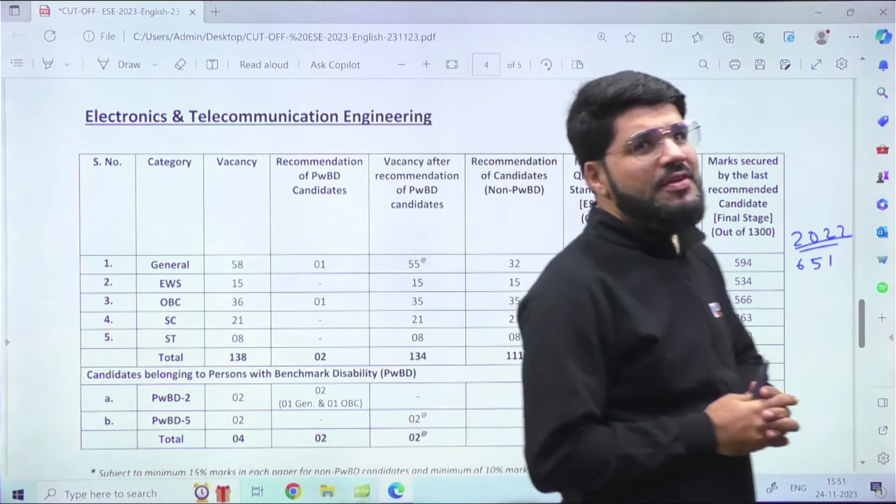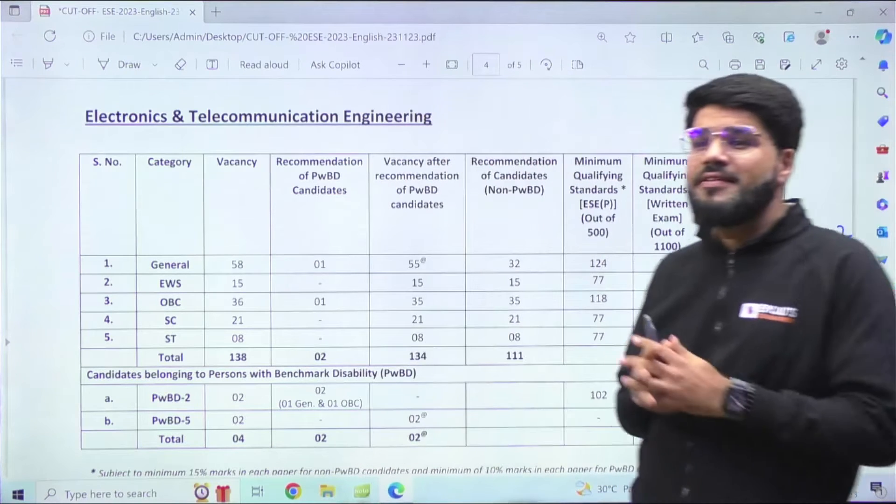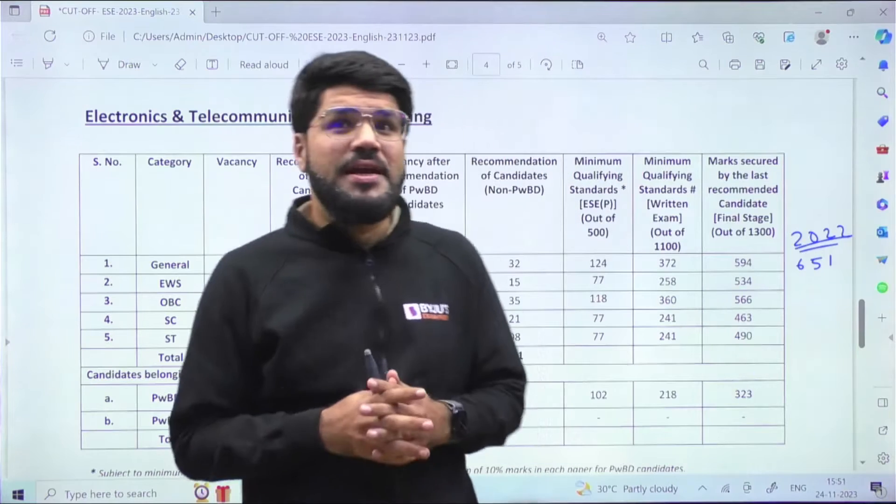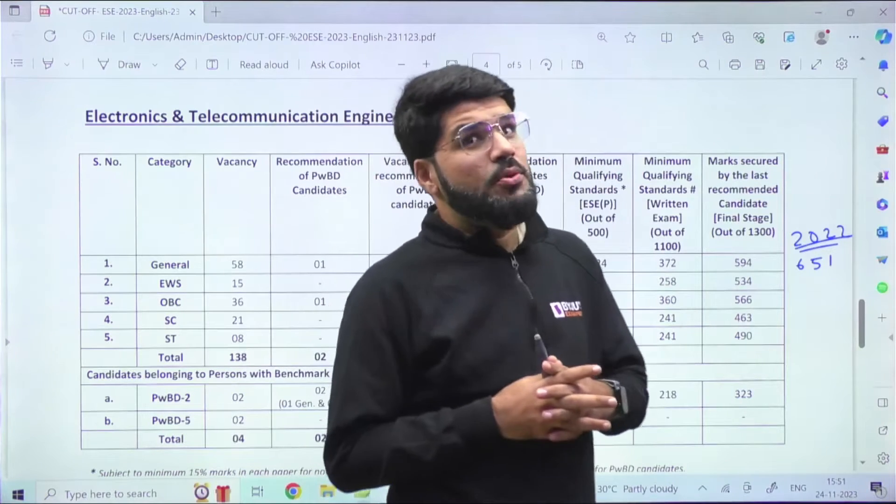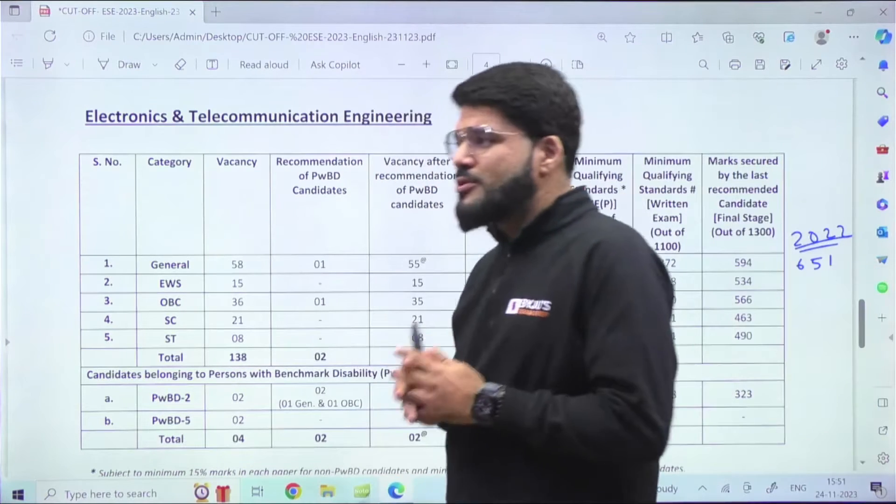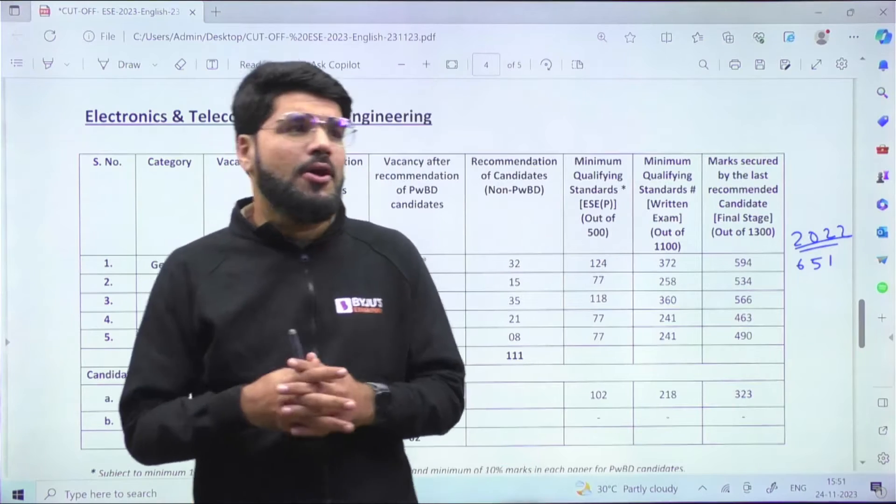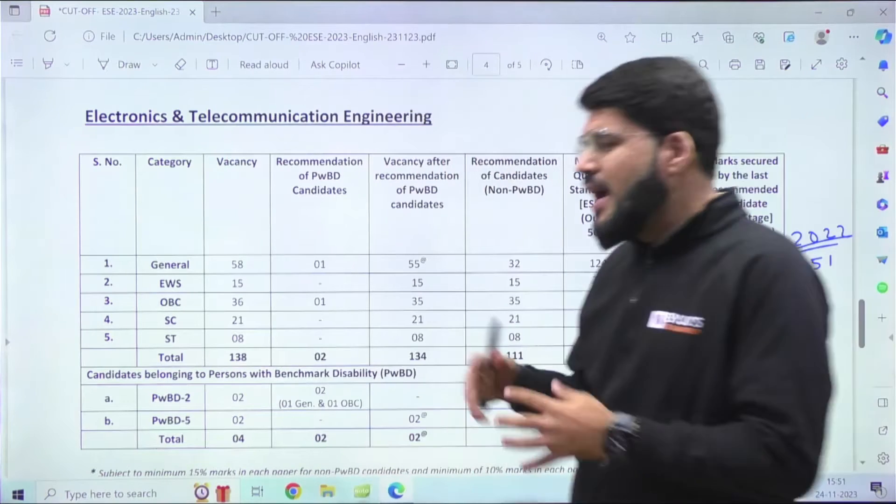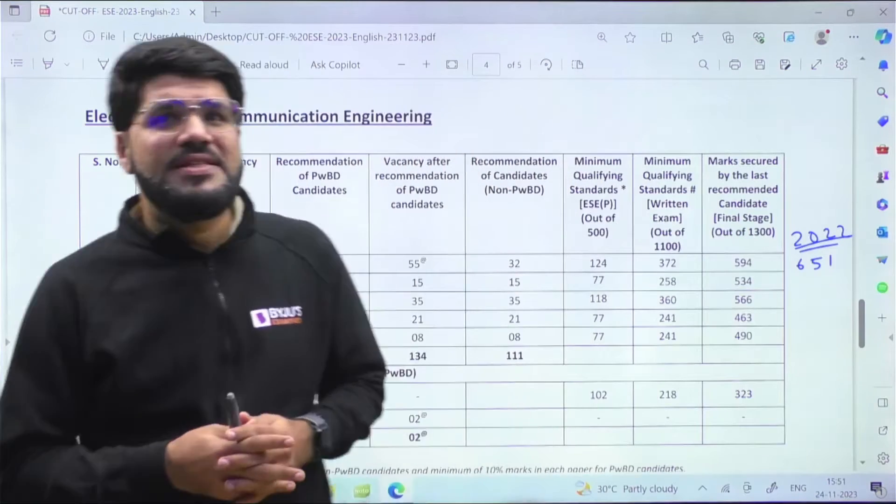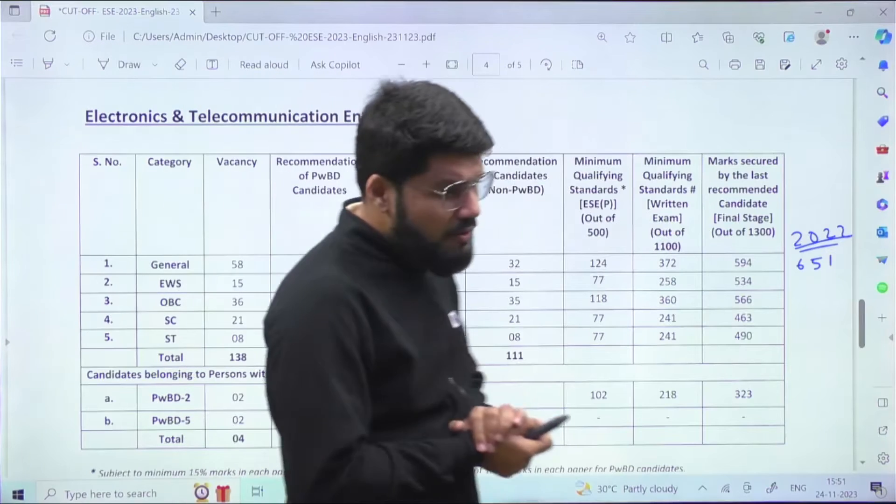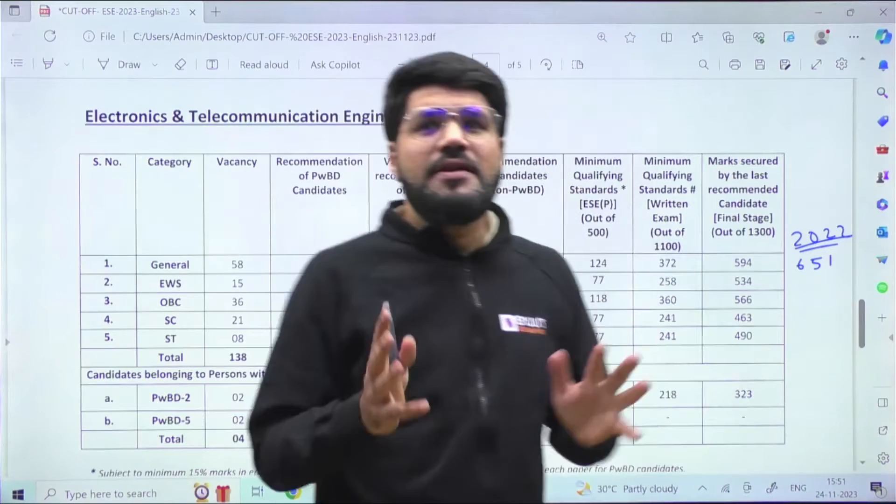On 22nd November, UPSC announced the final results for Engineering Services Examination held for 2023. Congratulations to all the students who got top ranks and qualified this examination. Soon after that, UPSC also has given the cutoff list - not only the final cutoff out of 1300, but even the cutoff for prelims and the combined written exam (prelims plus mains).